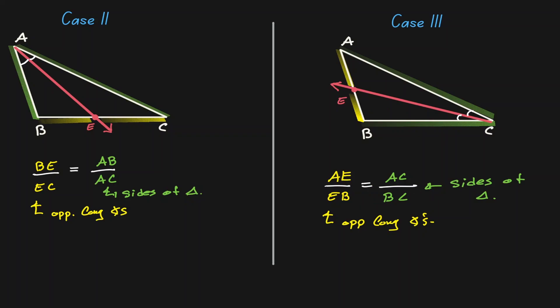Regardless of which angle gets bisected, this result always holds true. If you divide the sides which are opposite of the congruent angles, they will always be equivalent to the sides of your original triangle. We refer to this as the triangle angle bisector theorem.